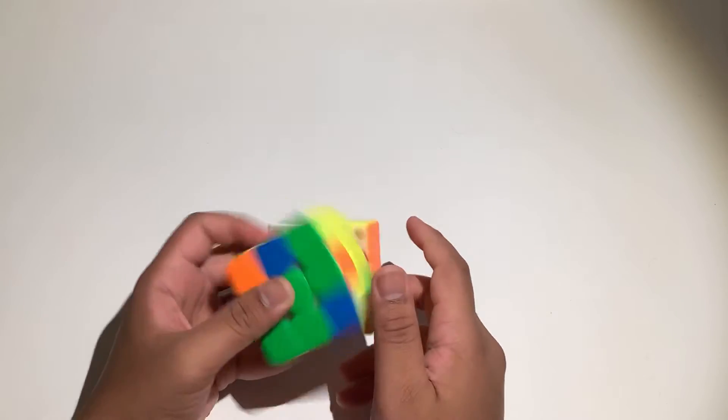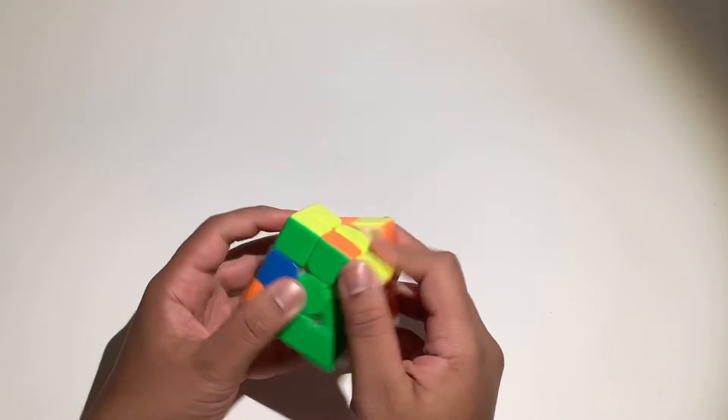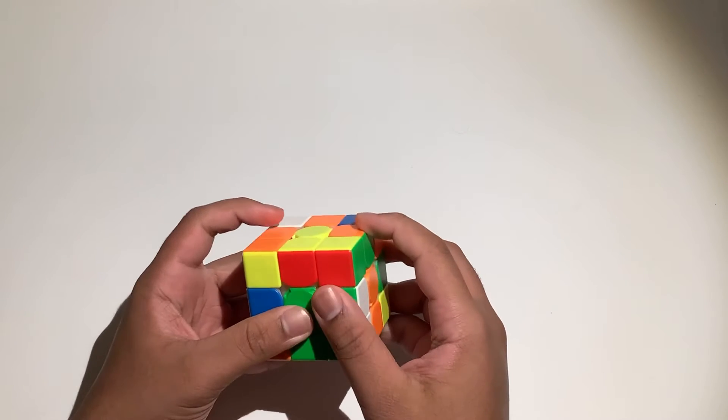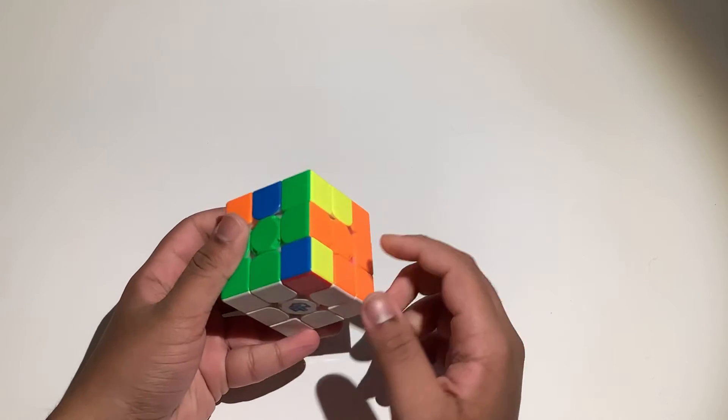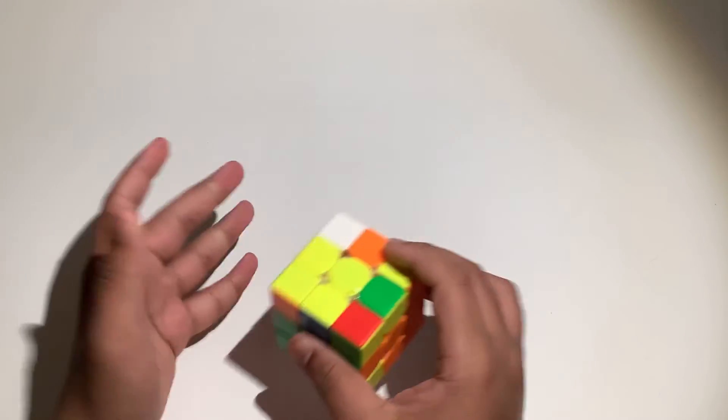However, if we do wide FR wide F', we are left with this. So instead what we should do is wide FR and then we do an S move. That way it preserves this layer as well.